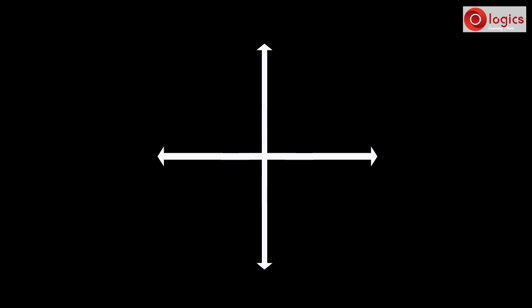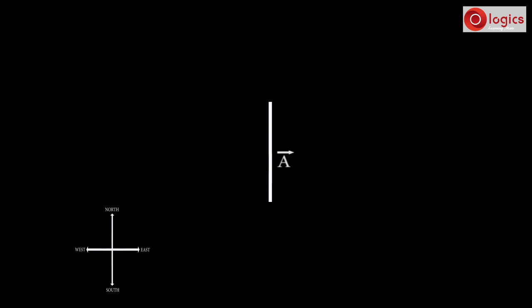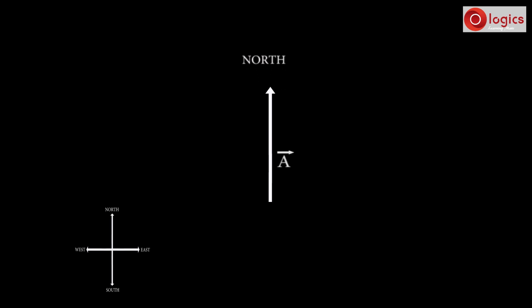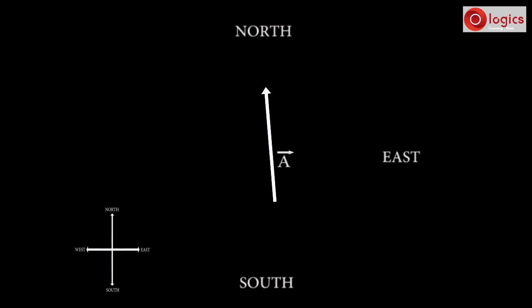As you know, these are standard directions. This is north direction. Opposite to north is south direction. This is east direction. Opposite to east is west direction. This is a vector A-bar. This is its tail, this is its head, this is its magnitude, and this is its direction. If the vector points this way, it is north; if in the opposite direction, it is south; this way is east, and this way is west.